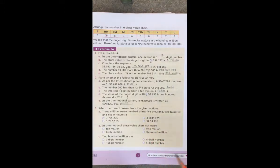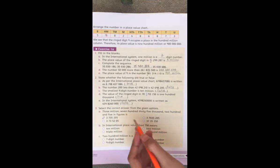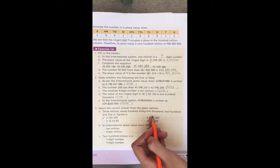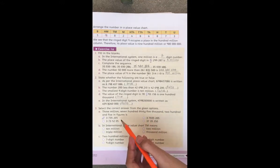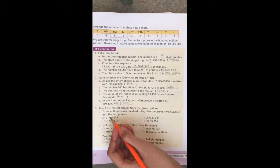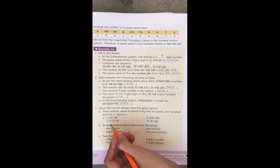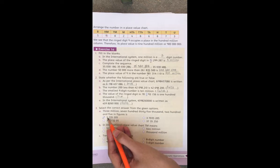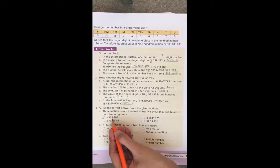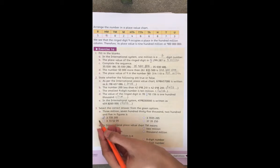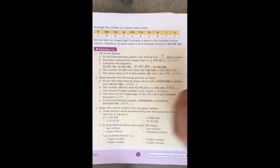Here we have our first question. 3,735,205 in figures. We will check it with our first option: 3,735,205. Our option is correct.